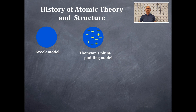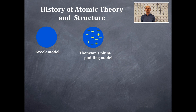Then there's J.J. Thomson's model, which is called the plum pudding model of the atom. Basically you have electrons and positive charge spread equally throughout this plum pudding model of the atom.